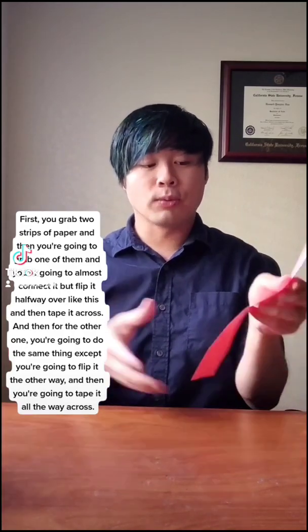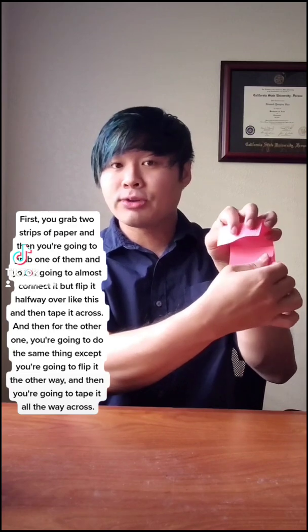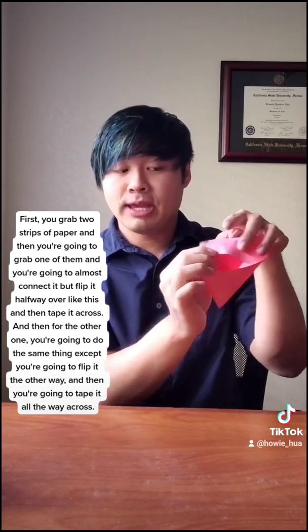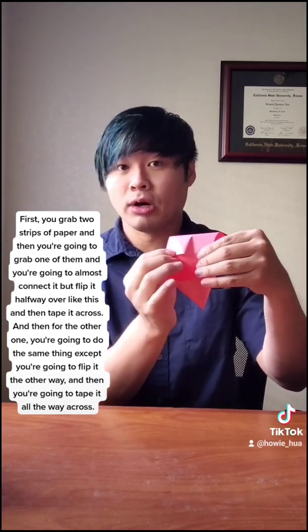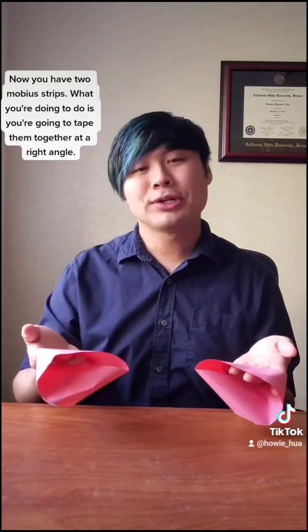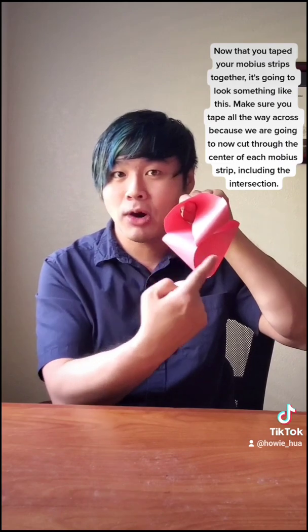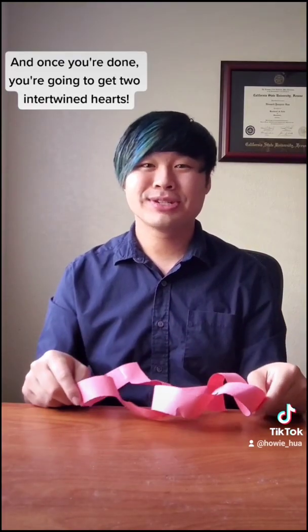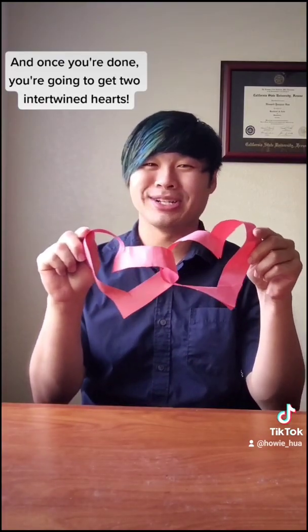And then for the other one, you're going to do the same thing, except you're going to flip it the other way. And then you're going to tape it all the way across. Now you have two Mobius strips. What you're going to do is you're going to tape them together at a right angle. Make sure you taped all the way across, because we are going to now cut through the center of each Mobius strip, including the intersection. And once you're done, you're going to get two intertwined hearts.